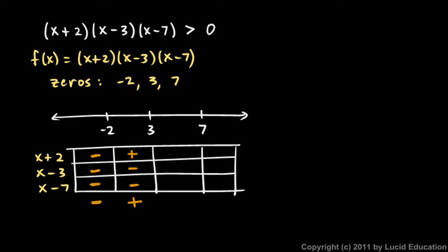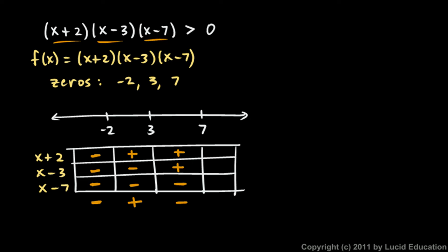For x values from 3 to 7: x + 2 is positive, x − 3 is also positive, but x − 7 is negative — so positive times positive times negative gives a negative result. If x is greater than 7, all three factors are positive, so the product is positive. Since we want this to be greater than 0, we want the positive regions: from negative 2 to 3, and greater than 7.